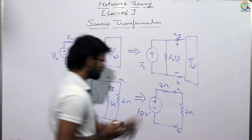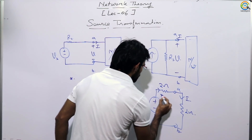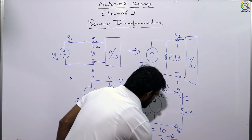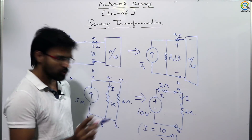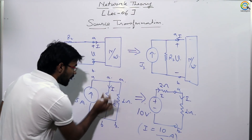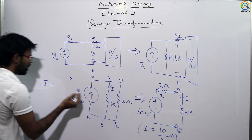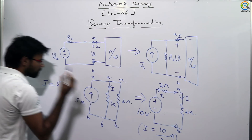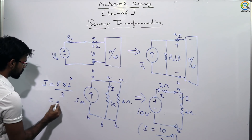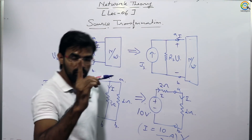The current value calculated is I = 10 / 3 ampere — but that is not the right result. To find the correct value, use the current division rule: I = 5 × (1 / (2 + 1)) = 5 / 3 ampere. That is the right answer. The first result was wrong; this one is correct.